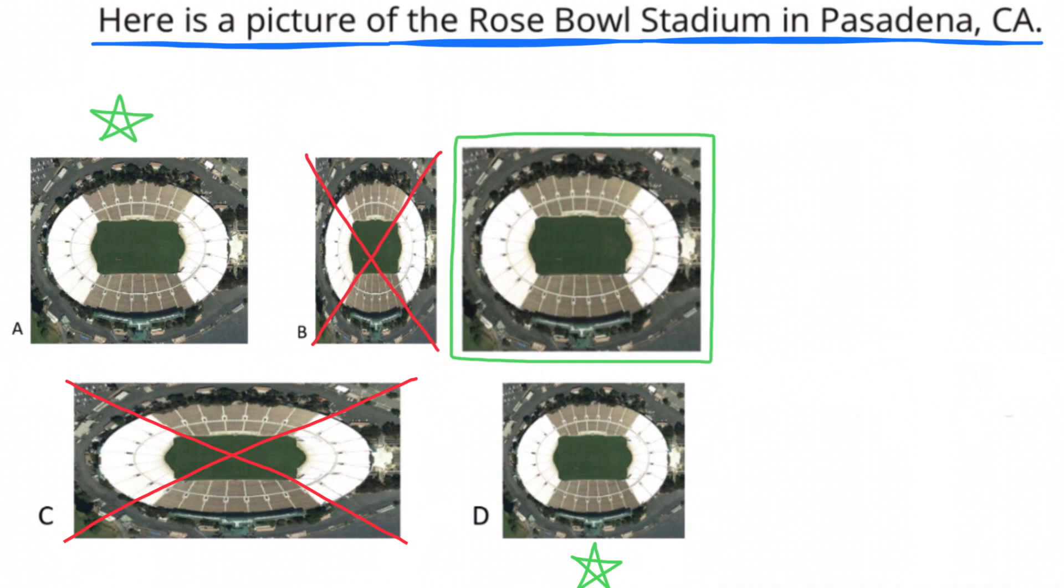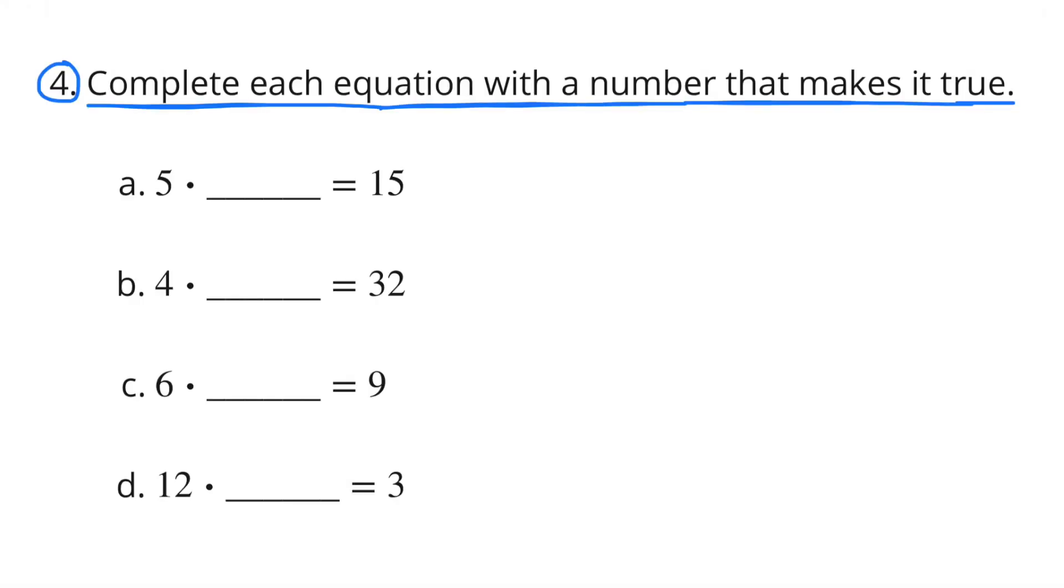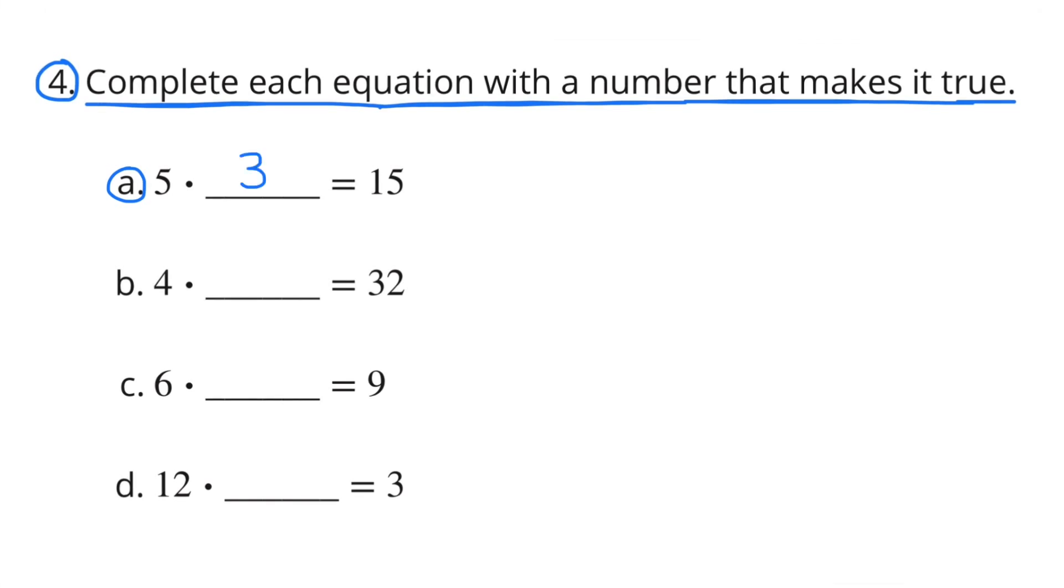Number four. Complete each equation with a number that makes it true. A: 5 times what number equals 15? 5 times 3 equals 15. B: 4 times what number equals 32? 4 times 8 equals 32.